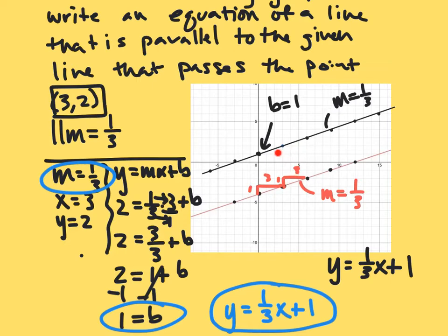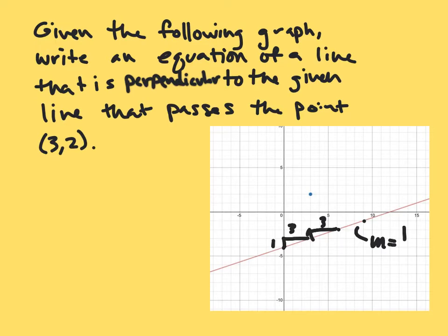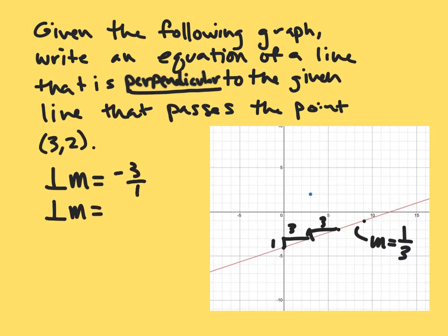You can use a graph, but you need to be able to do the algebra involved as well. Now we do the same thing, except we write the equation of a line that is perpendicular to the given line passing through the point three, two. We identify the slope of the original line as one third. For a perpendicular line, we flip the fraction and change the sign, giving us negative three over one, or simply negative three.